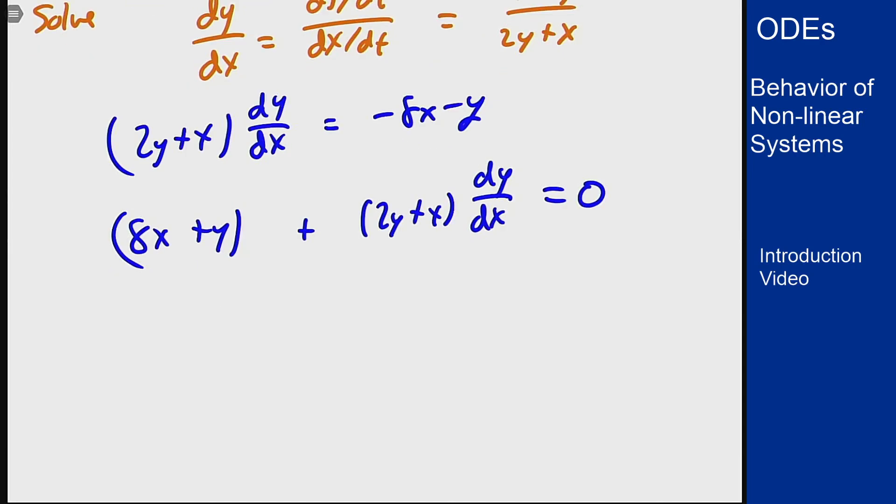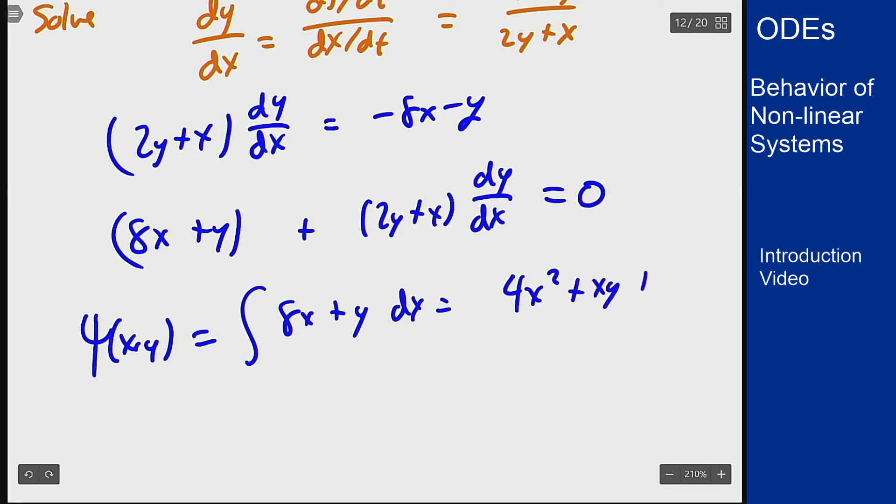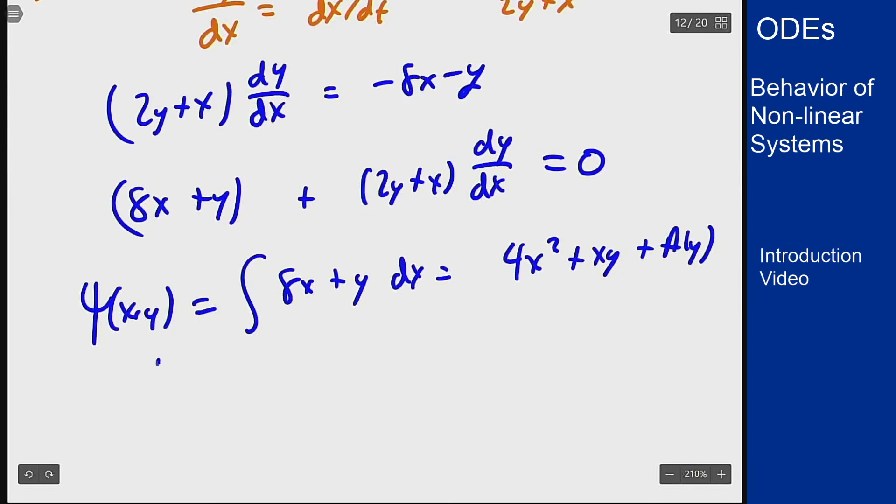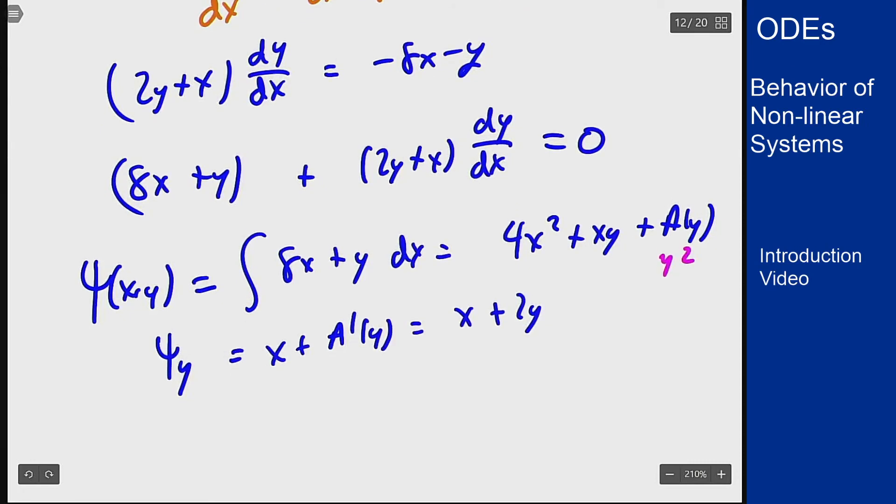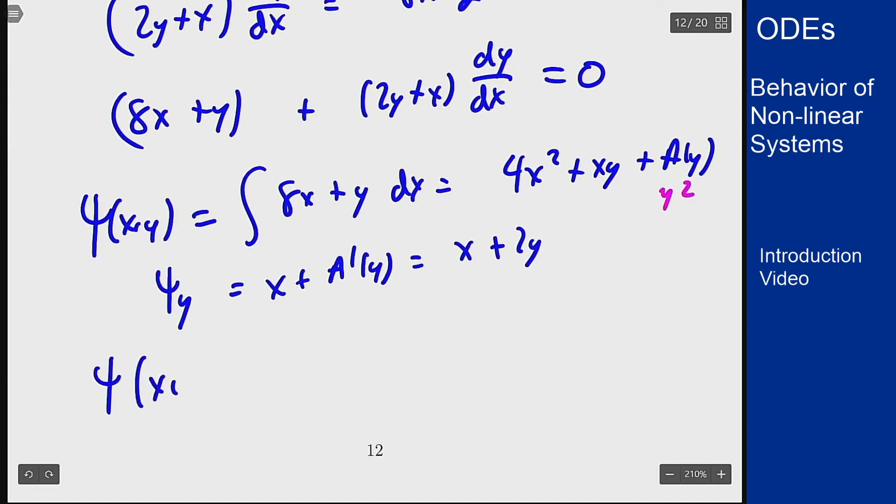Integrate the first one in x, I get integral of (8x + y)dx, I get 4x² plus xy plus a function of y. Differentiate in y, I get x plus a'(y) should equal x plus 2y, which means a(y) is y². So what I get from my trajectories are that ψ(x,y) equals 4x² plus xy plus y², and this equaling c will be my trajectories here.